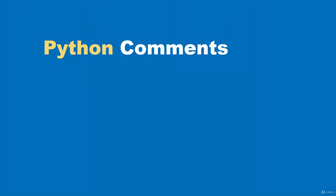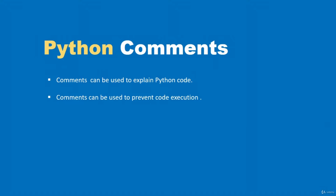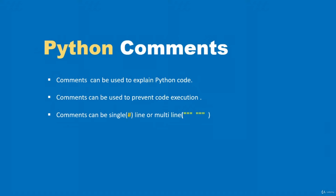Python comments can be very useful — they can be used to explain your Python code to yourself and to others. Comments can also be used to prevent execution of code when testing. You may have certain aspects of code you don't want to run during execution; adding comments to that code prevents its execution, which is very useful during testing. There are two main types of comments in Python: single line comments, represented by the hash symbol, and multi-line comments, represented by three double quotes or three single quotes on either side of the code you want to comment.